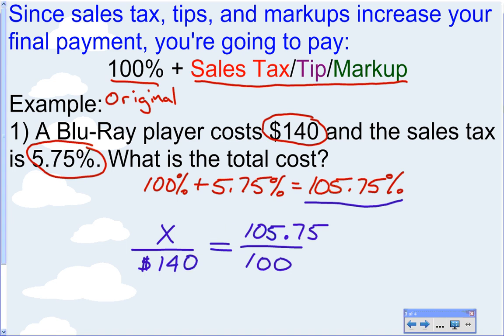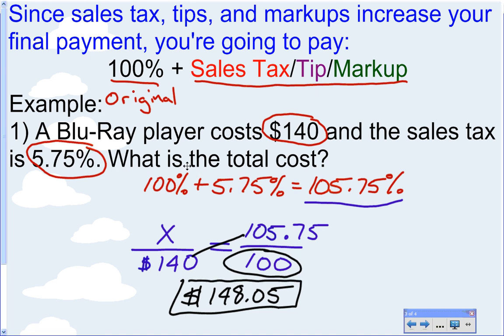And now, we're going to solve this the same way we've been solving proportions. Cross, multiply, and divide. So, 105.75 times 140 divided by 100. And you're going to get $148.05. So, that's how much you're going to pay for the Blu-ray player when you include the tax.